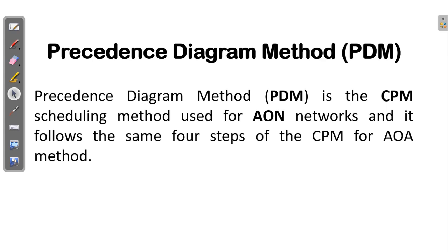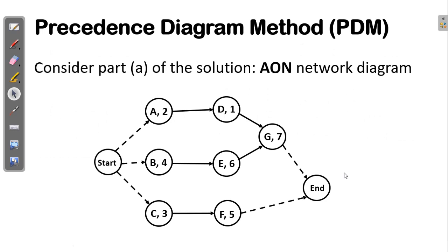We have seen how to compute the late time, early time, and floats in the activity-on-arc method. Now we are going to use the precedence diagram to compute those same values. We will consider the activity-on-node diagram from the first part of our video series, and use it to show how you can solve the early time, late time, and floats using the precedence diagram.